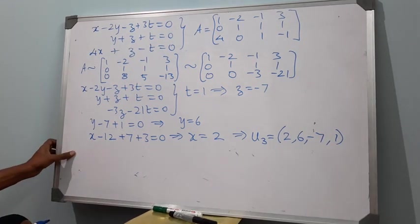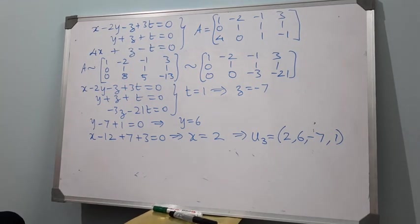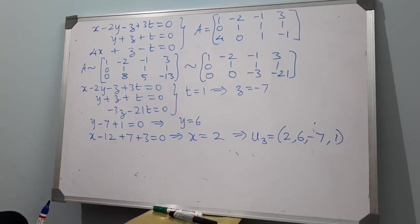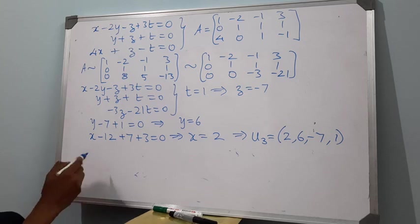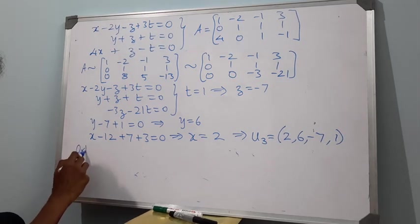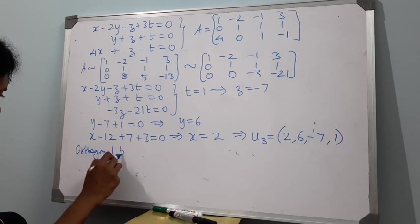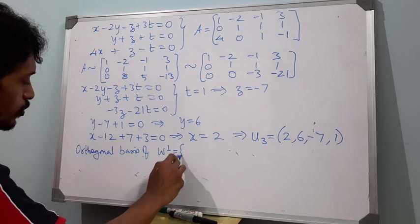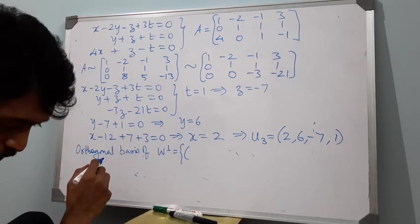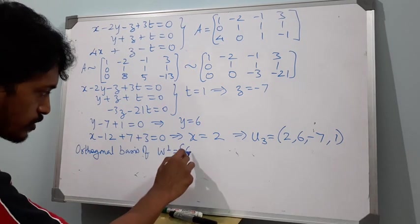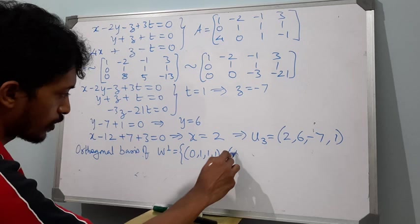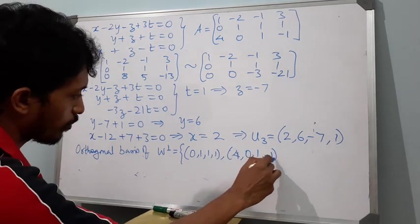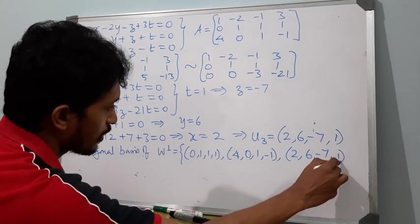In the previous problems we just found a basis for the orthogonal complement. But in this problem, we have ensured that the basis {u1, u2, u3} are orthogonal to each other. So the orthogonal basis of W perp is {(0, 1, 1, 1), (4, 0, 1, -1), (2, 6, -7, 1)}.